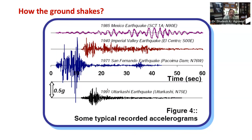Large earthquakes at a greater distance can produce weak ground motion that may not damage structures. From an engineering point of view, strong ground motion — which can often damage structures — is of interest, and it can happen with earthquakes that occur in the vicinity or even with large earthquakes at medium to large distances. Let's understand the characteristics of strong ground motion.